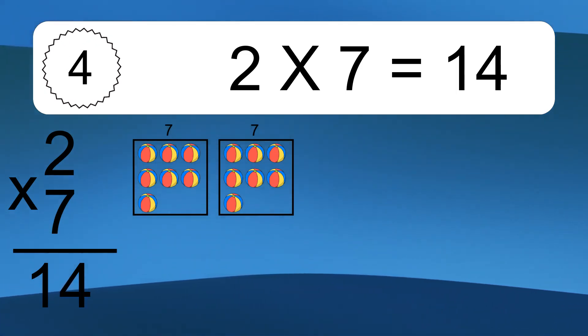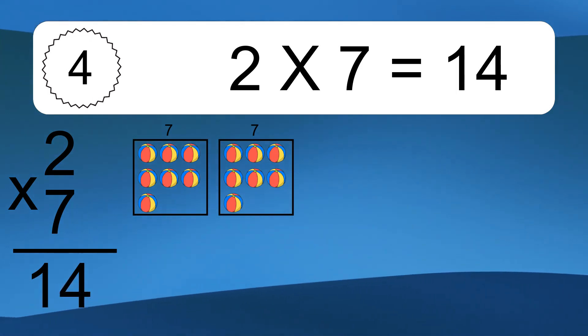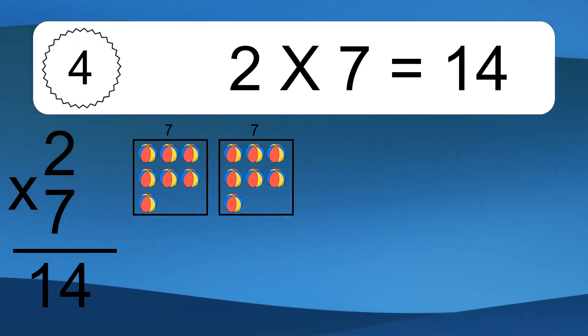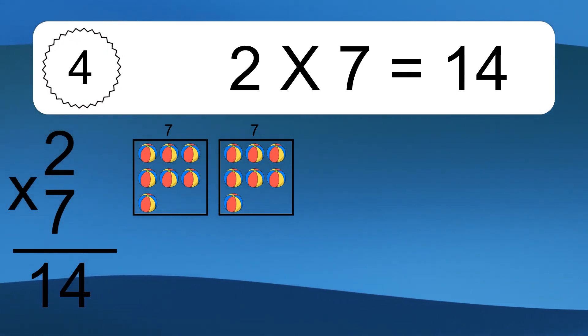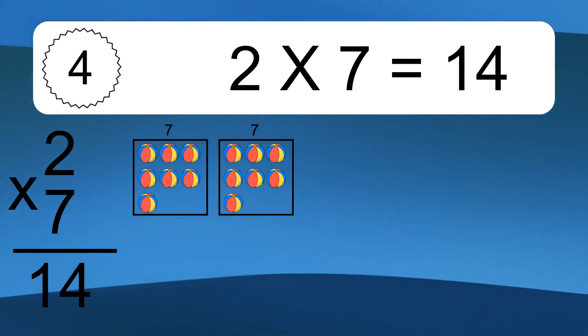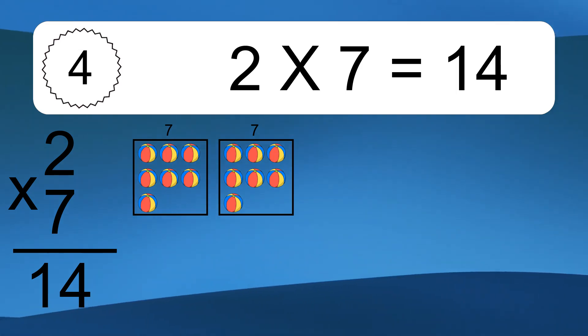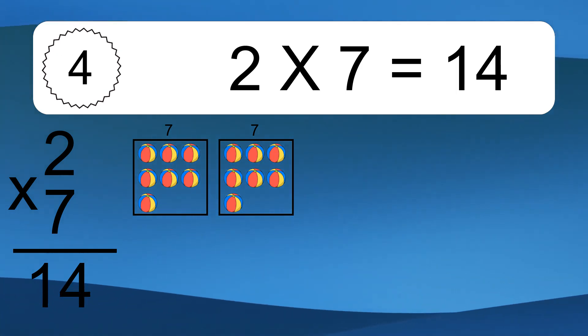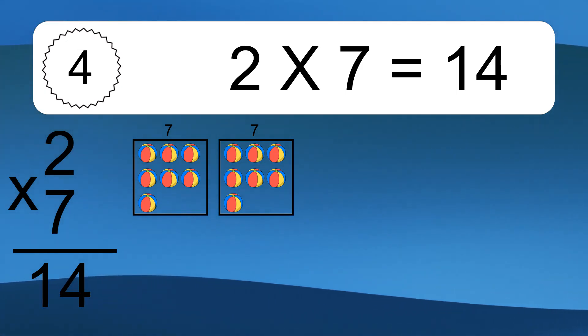We have 2 boxes, and each box has 7 colorful balls inside. If you count all the balls in all the boxes together, you will have 2 times 7 balls. This equals 14 balls.